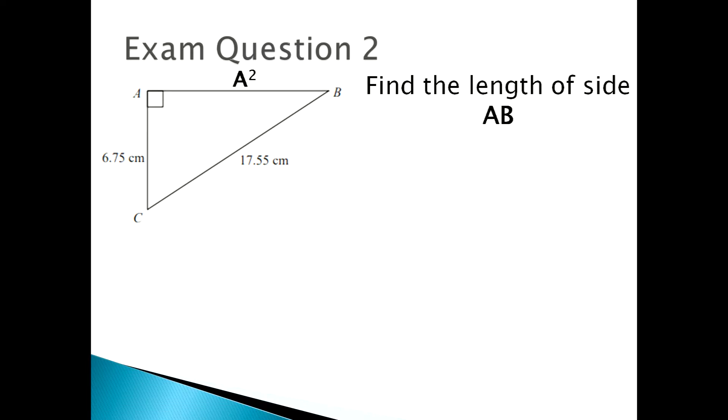First, always state your formula. A squared plus b squared equals c squared. Next, you need to substitute in the given values. A squared plus 6.5 squared equals 17.55 squared.